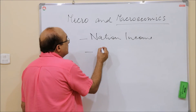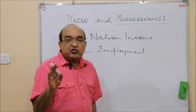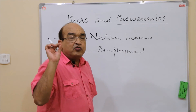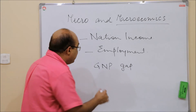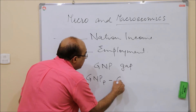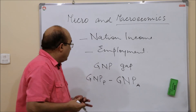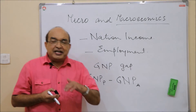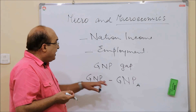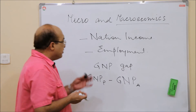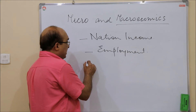Another important macro aggregate is employment — specifically the level of employment of productive resources, especially the labor force. There is a concept known as the GNP gap, defined as the difference between potential GNP and actual GNP. Potential GNP is the national income that can be generated when all productive resources are fully employed. Ideally this gap should be zero, but that is never the case — some resources are always left unemployed for a variety of reasons.